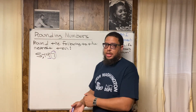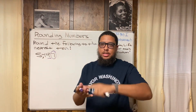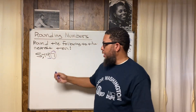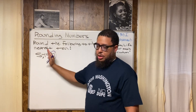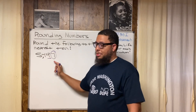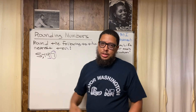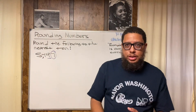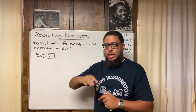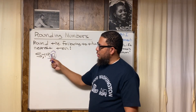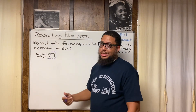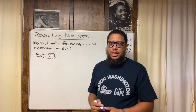Because the digit is a seven, the rule is: five and above, give it a shove. If it's a five, six, seven, eight, or nine, this nine goes up. If it had been a zero, one, two, three, or four, the digit would stay and you'd go down — from 97 down to 90. So we only have two choices when we round: either round up to the next higher ten or round down to the next lower ten.